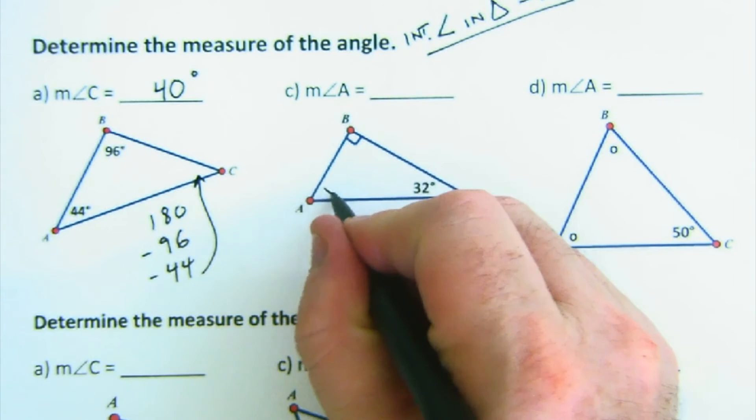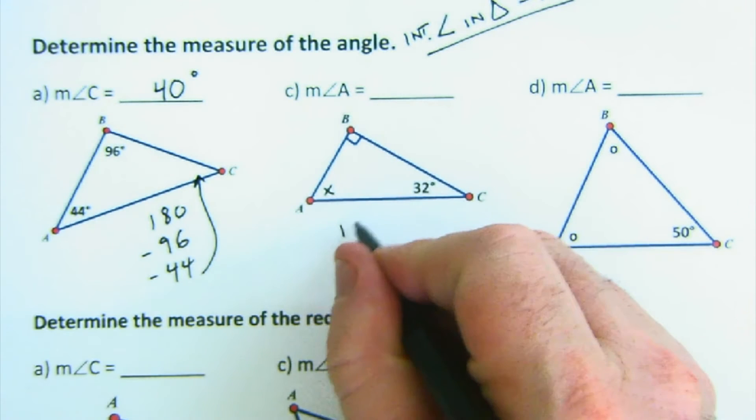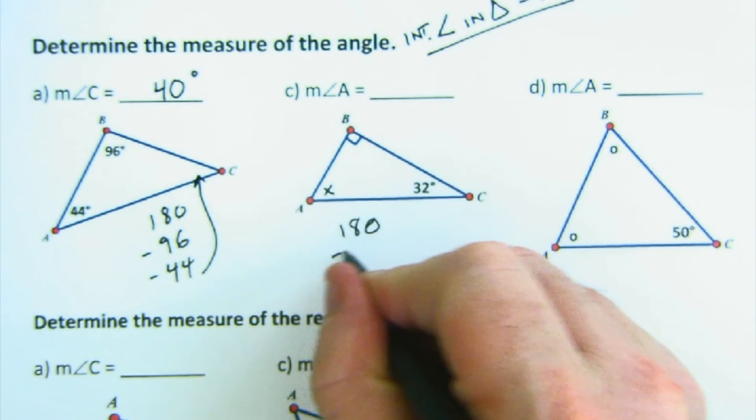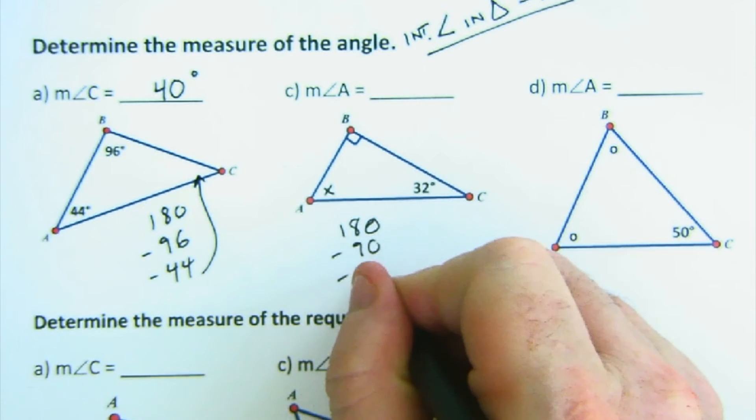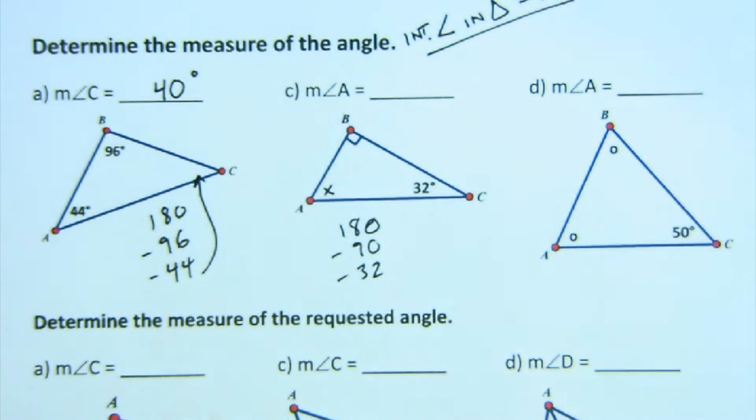Here, similarly, if we want to know this angle, we would take 180, subtract the 90, subtract the 32, and we get, of course, a 58 in that spot, 58.